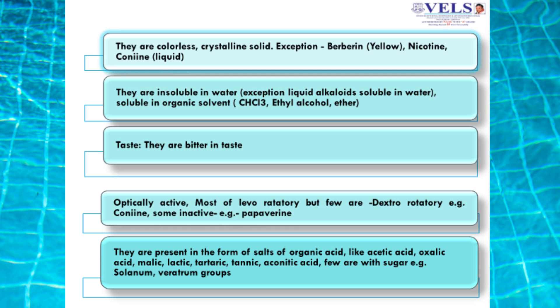Alkaloids are colorless crystalline solid particles, but some exceptions exist. Alkaloid berberine is yellow in color, and nicotine and coniine are liquid in nature. Alkaloids are soluble in organic solvents like chloroform and alcohol, bitter in taste, optically active, and mostly levorotatory in nature. Alkaloids exist in plants in two forms: either free alkaloid (alkaloidal base) or salt form, forming salts with plant acids like acetic acid, oxalic acid, malic acid, lactic acid, etc.